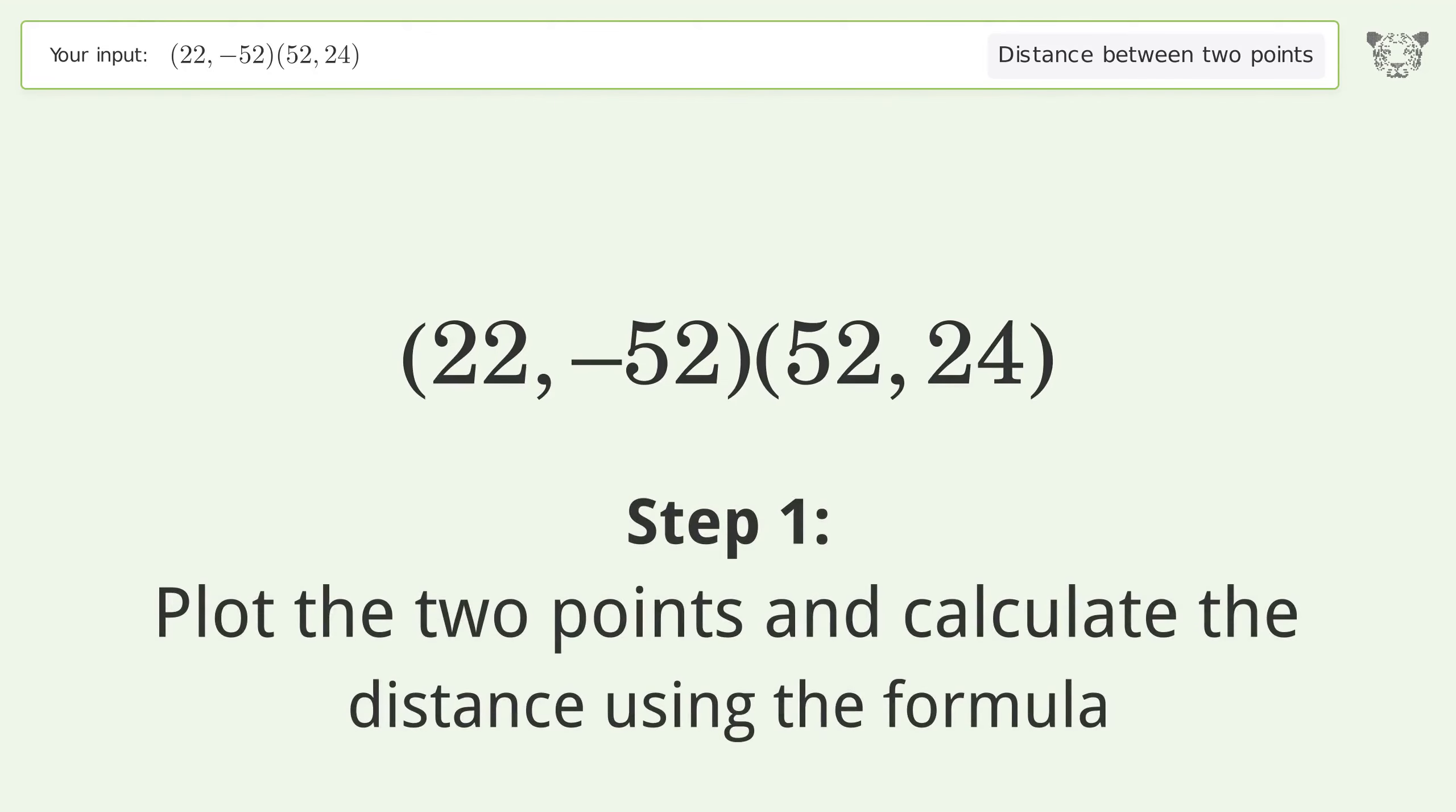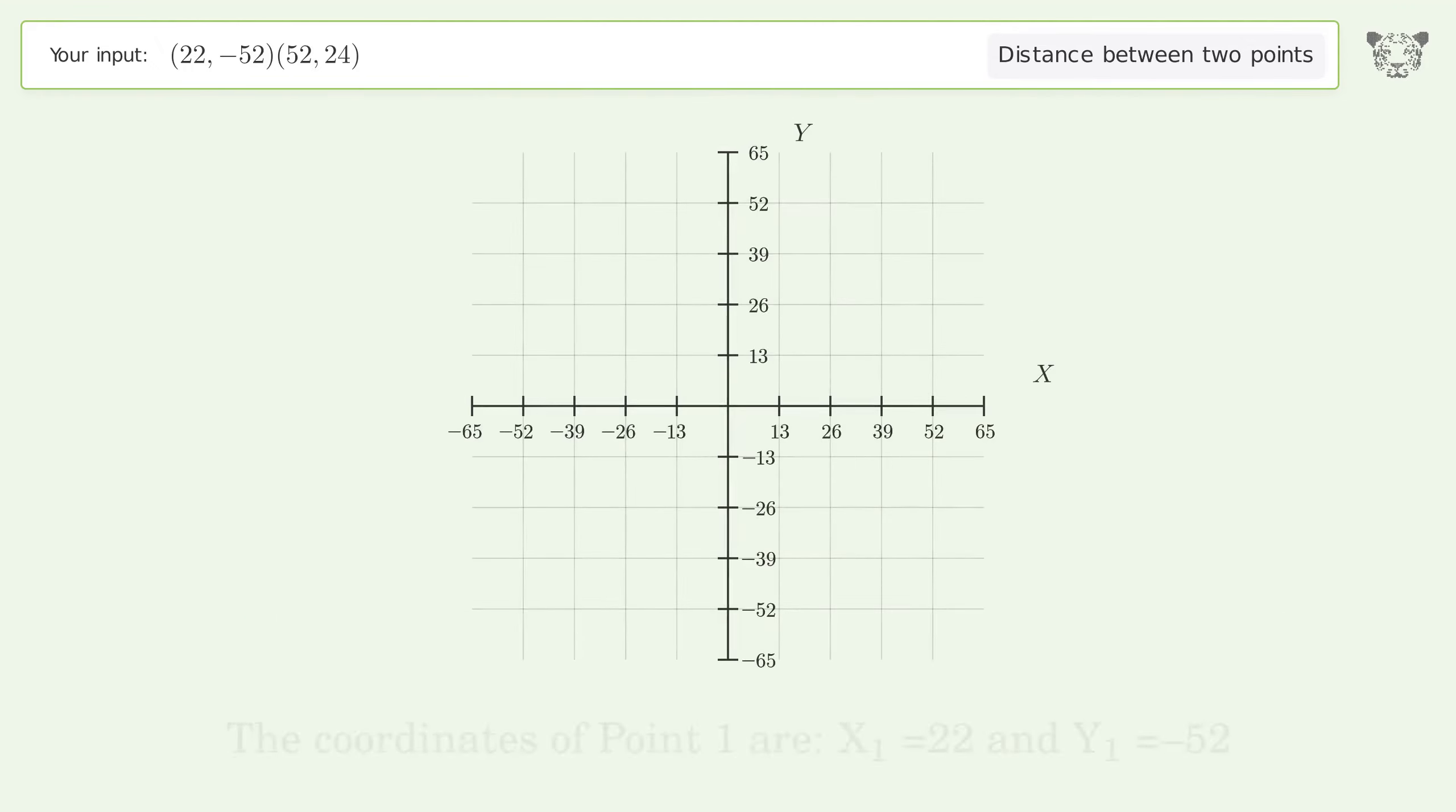Plot the two points and calculate the distance using the formula. The coordinates of point 1 are x1 equals 22 and y1 equals negative 52. The coordinates of point 2 are x2 equals 52 and y2 equals 24.